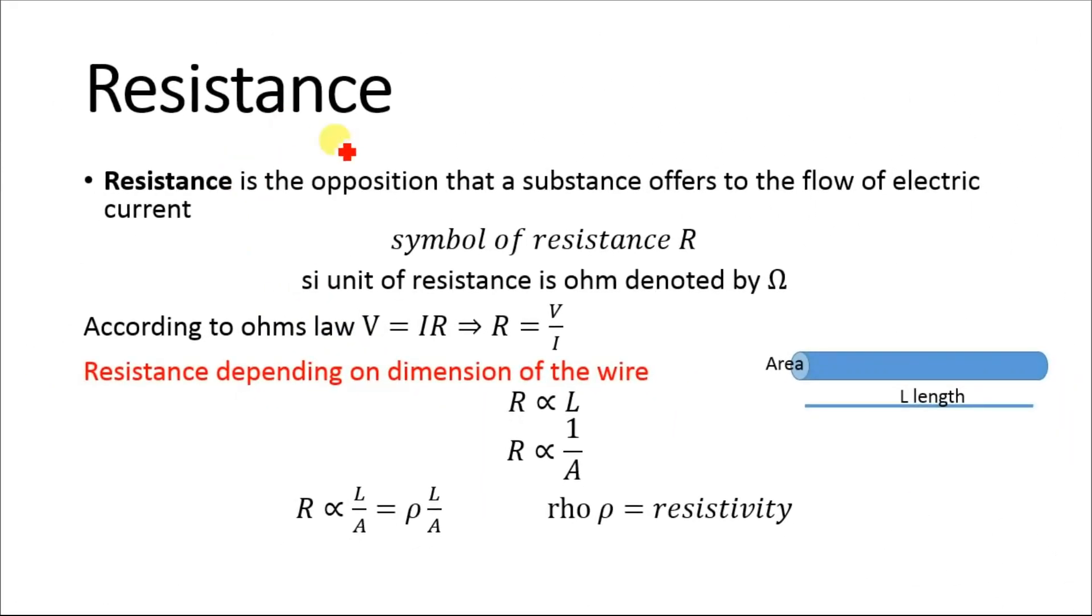Let's explain resistance first. Resistance is the opposition that a substance offers to the flow of electric current. The symbol of resistance is R, and the SI unit of resistance is ohm, denoted by the symbol Ω.